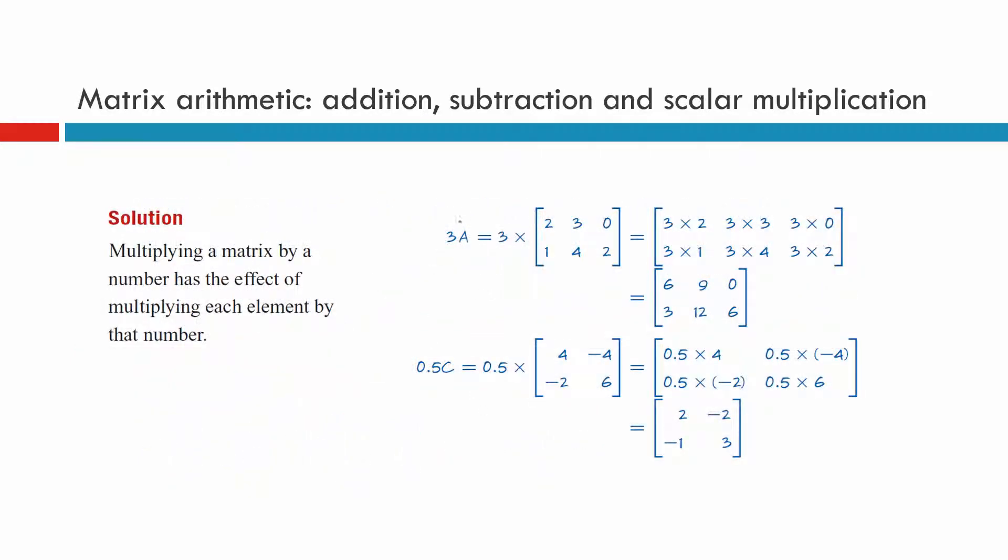Three times A. Matrix A was two, three, zero, one, four, two. And we're going to times everything in there by the number three. You don't have to show this line of the working out.